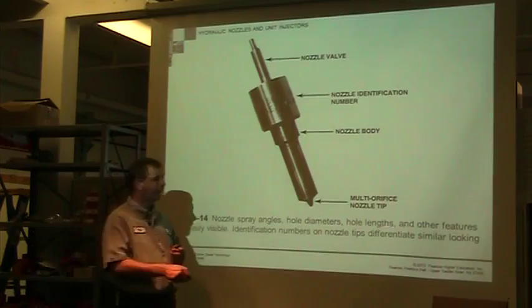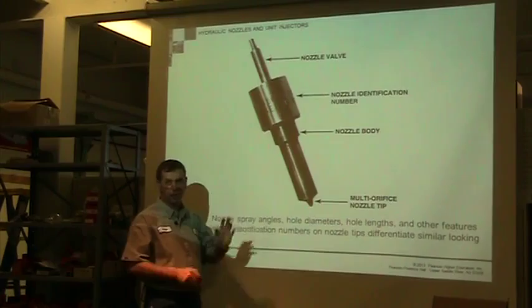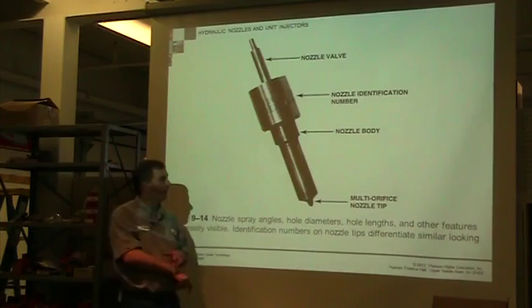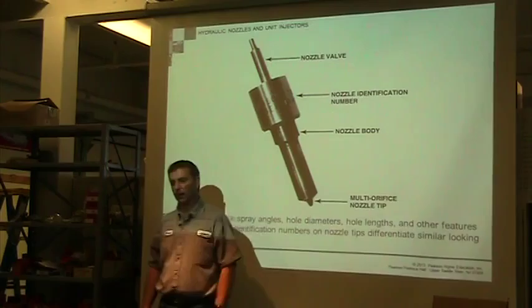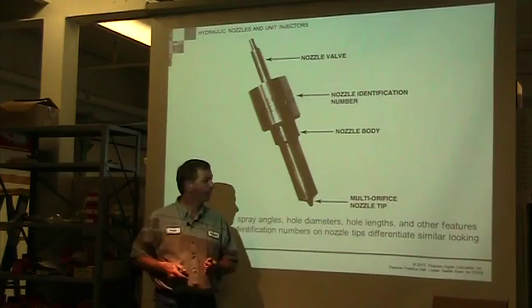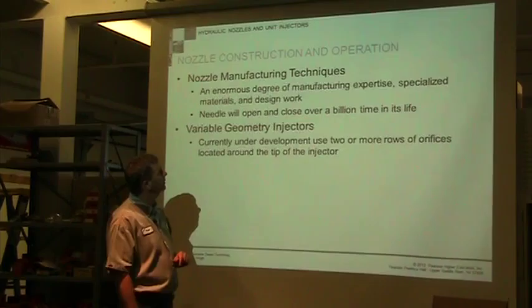Here's a multi-orifice nozzle tip. The spray angles, hole diameters, hole lengths, and other features are not all the same — it depends on where the injector enters the cylinder. If it comes in between two valves at an angle, there'll be small holes with a shallow angle on one side and larger holes on the upper side shooting across the piston. You may see some holes but not others because they're so small. This particular nozzle has a locating ball that slides down a slot, so each one has something to keep you from installing it incorrectly.